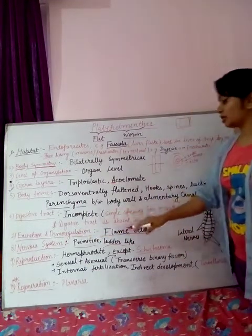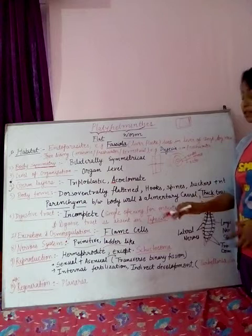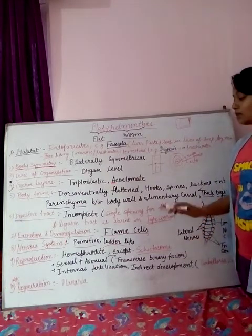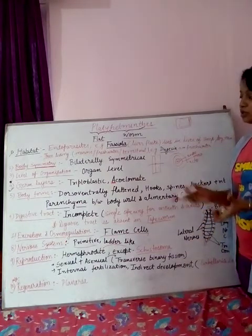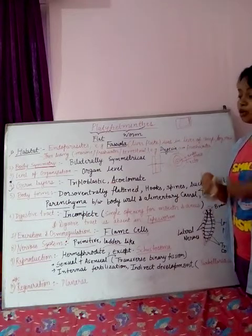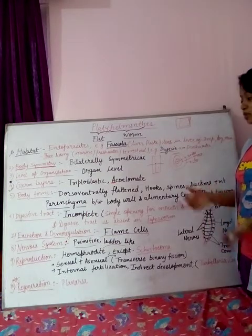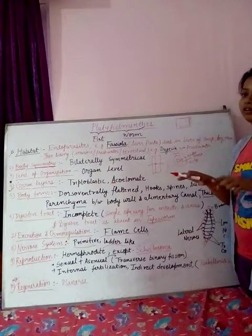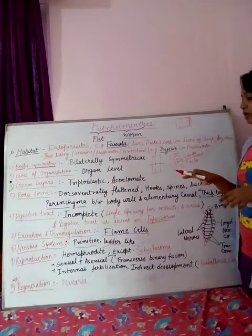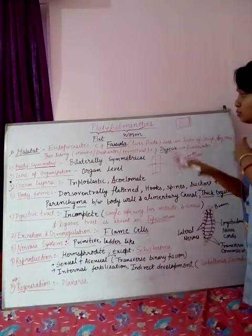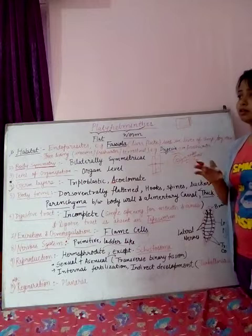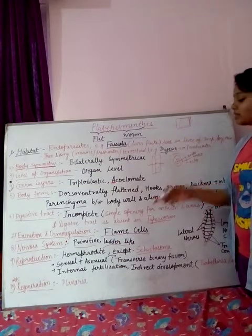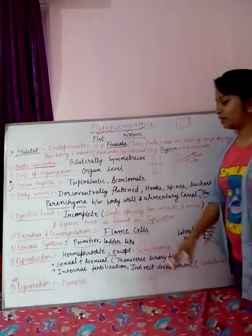Excretion and osmoregulation are both performed by the same flame cells. Flame cells are specialized structures that help excrete toxic material and also help maintain osmoregulation. Whatever osmoregulation is performed in Platyhelminthes is carried out by the flame cells.